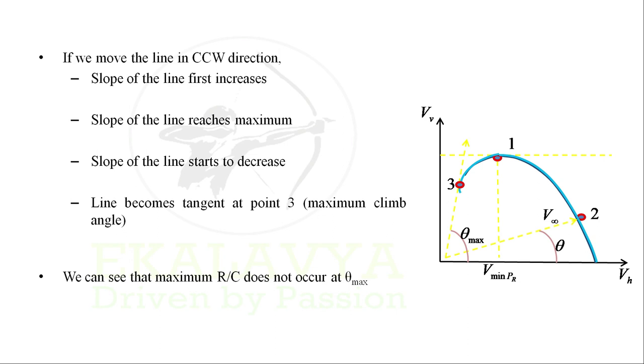Maximum rate of climb is at point 1 and maximum climb angle is at point 3. You can see that maximum rate of climb does not occur at theta max.